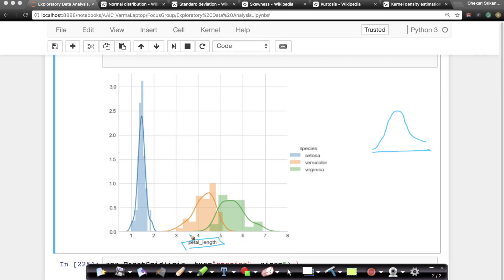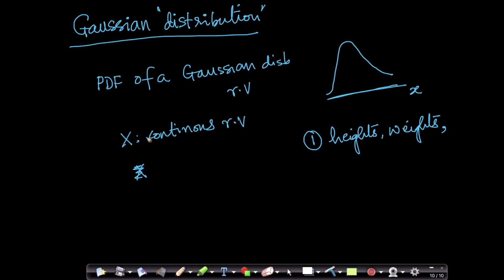Similarly, petal lengths and sepal lengths, which are measurements of sepals and petals of real flowers, all seem to look like bell curves. Gaussian distribution occurs a lot in nature, especially in natural phenomena like heights and weights. It is also connected to a very important idea in statistics called the central limit theorem that we will learn a little later.